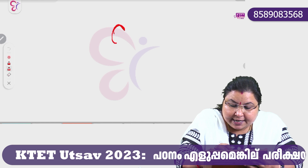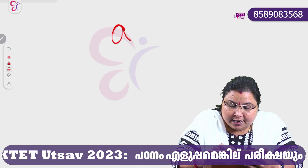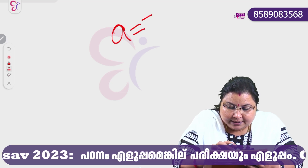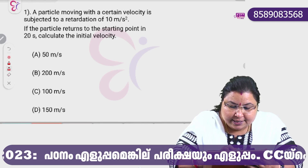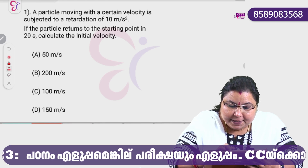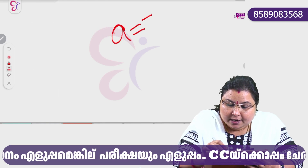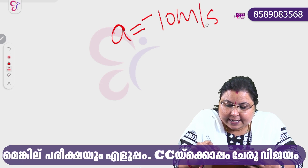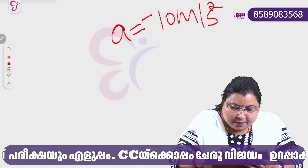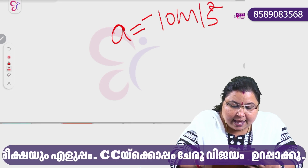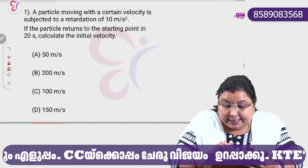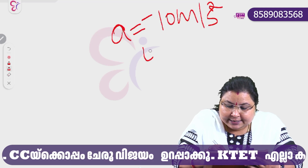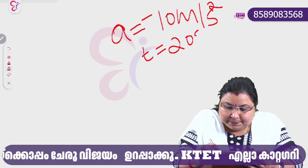Acceleration is called a retardation, so the retardation is called a negative acceleration. The acceleration value is 10 m per second square, so acceleration is minus 10 m per second square. Time is equal to 20 seconds.